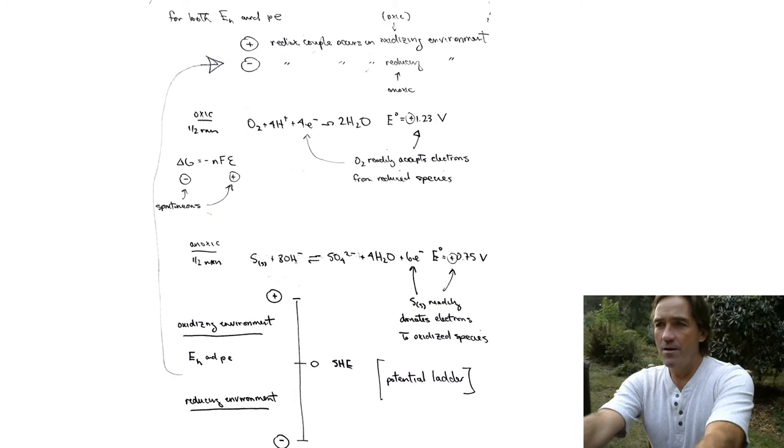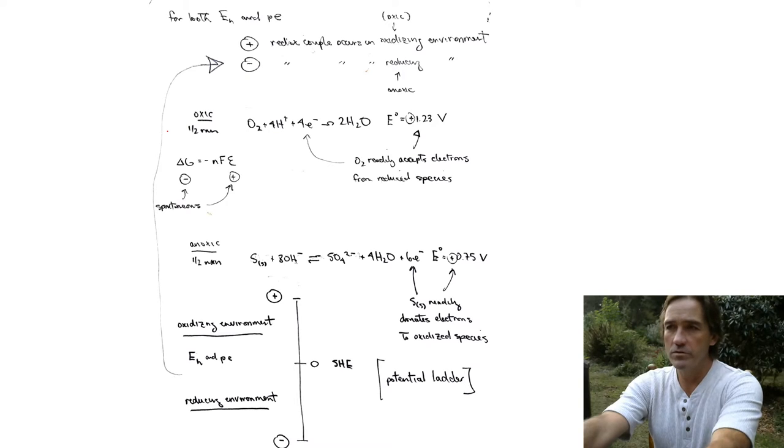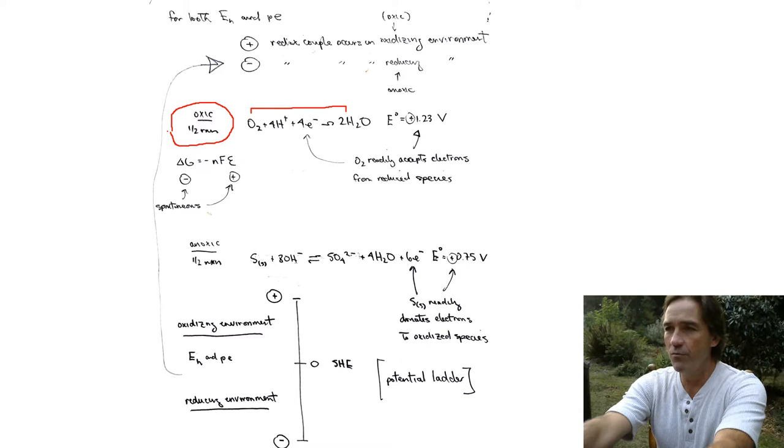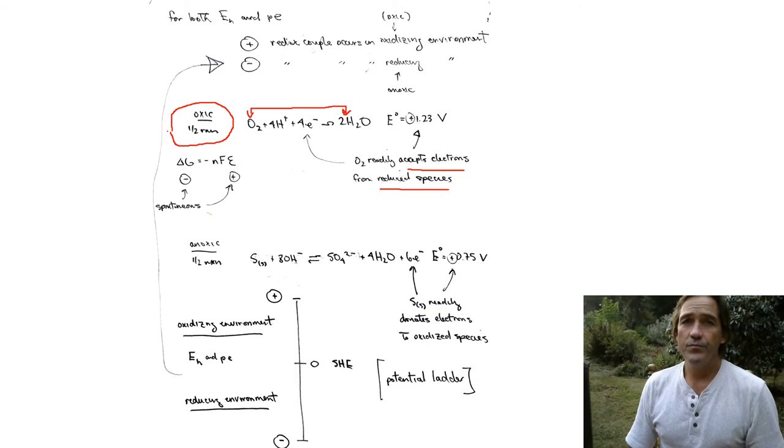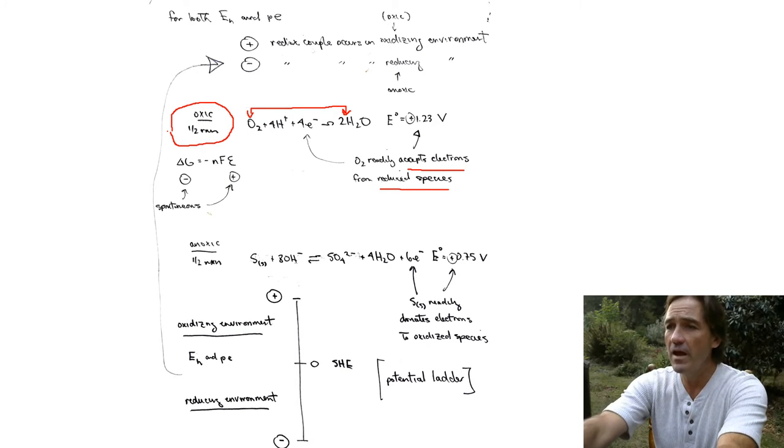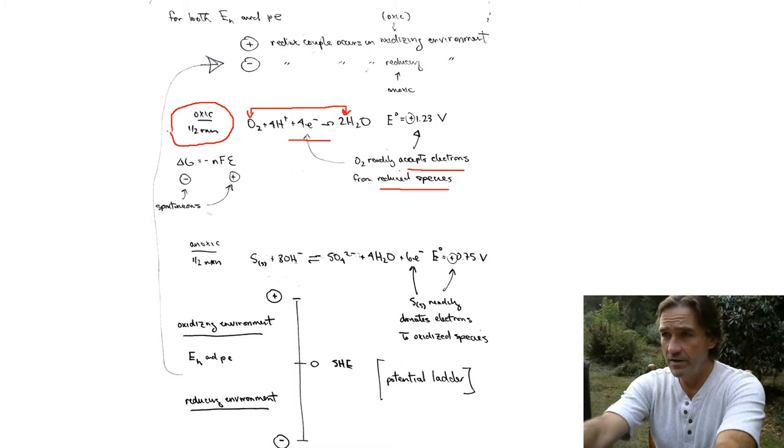Let's look at a few examples of redox couples. Let's look at one that occurs in oxic environments. Oxygen and water are what we call a redox couple. We have the oxidized form and the reduced form. Oxygen accepts electrons, and it readily does so with another reduced species. We notice that as written in this direction, as a reduction, we get a positive electromotive force or voltage.